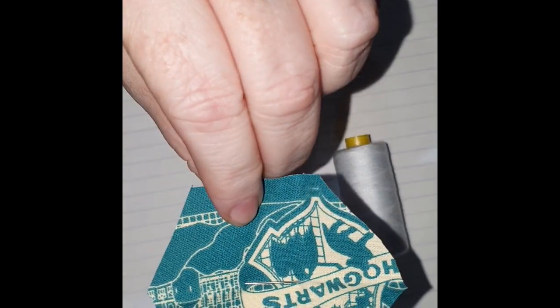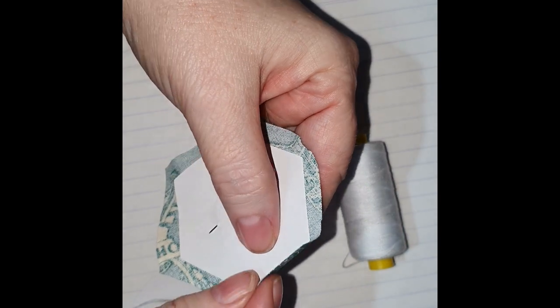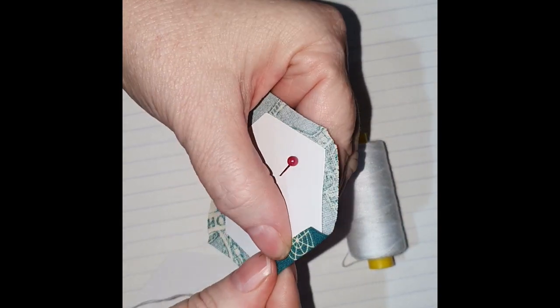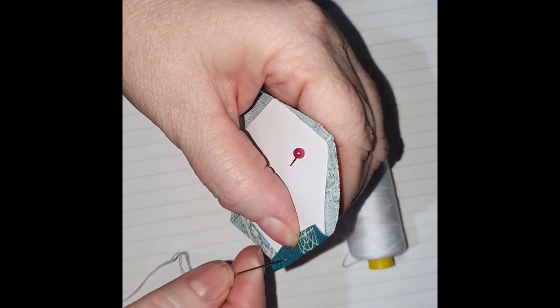This is English paper piecing. I've got my pre-cut paper hexagons and I've cut out my fabric.